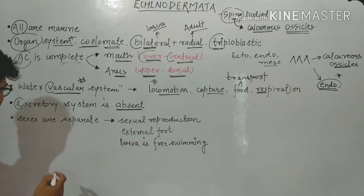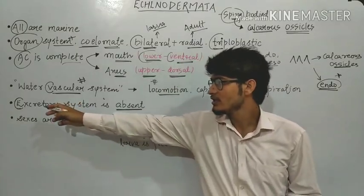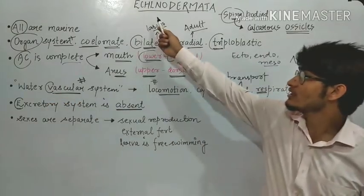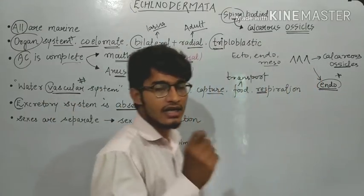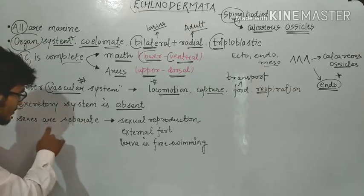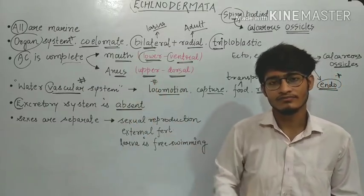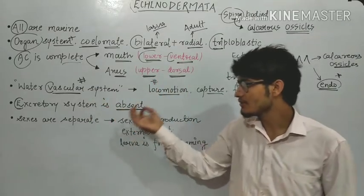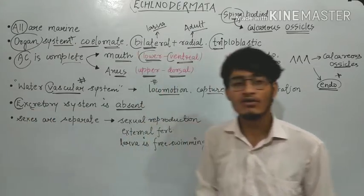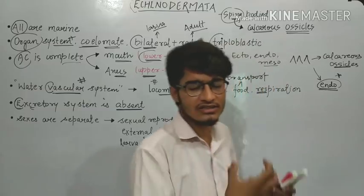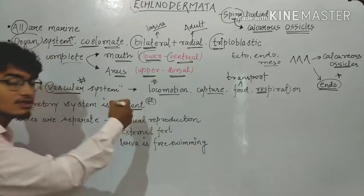The excretory system is absent in echinoderms. The letter 'E' is marked with a circle — E for echinoderms and E for excretory system — to remember that echinodermata, despite being a quite developed phylum, does not have a well-developed excretory system. So excretory system is absent in echinoderms. This is a very important point to remember.